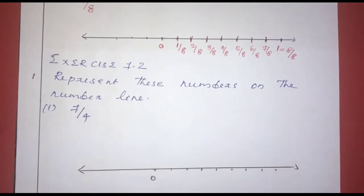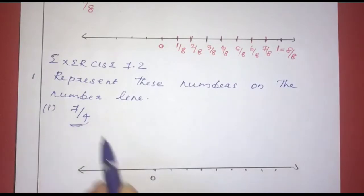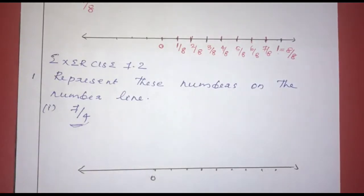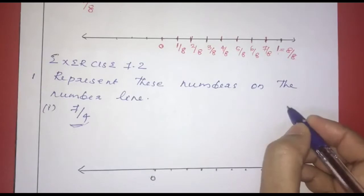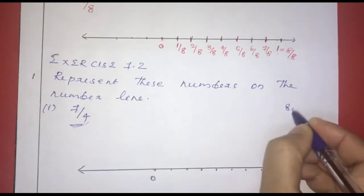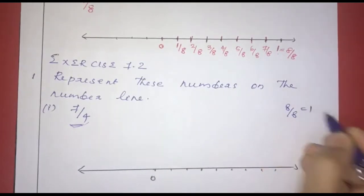Now we will mark two numbers on the number line. The first one is 7 by 4. 7 by 4 is a rational number. We will mark it on the number line. If we mark 1 by 8 equal distance, then 8 by 8 is 1.